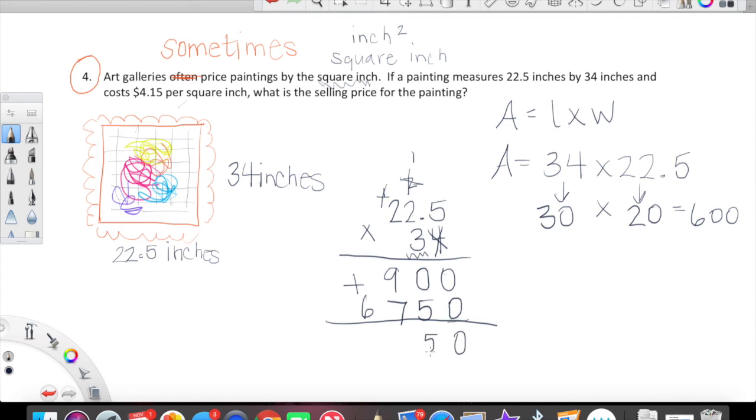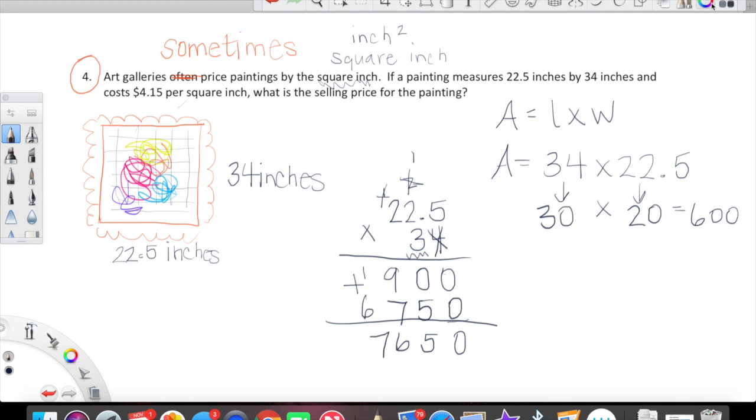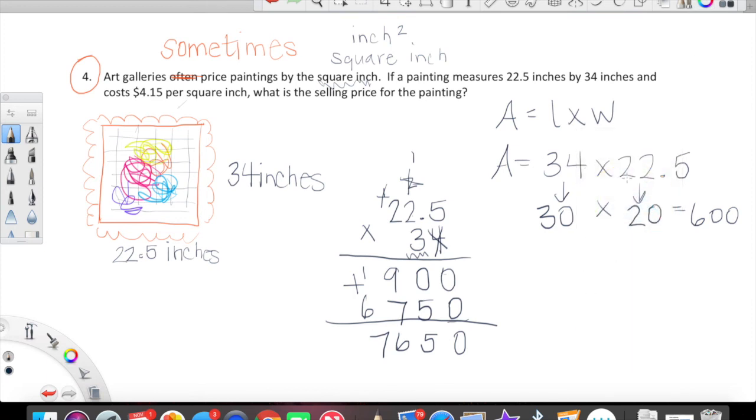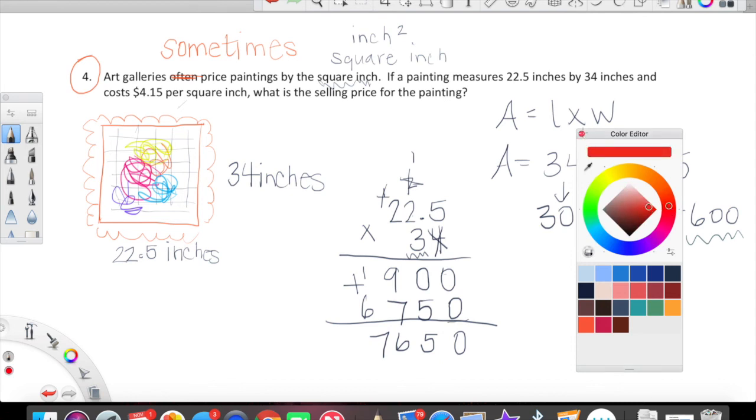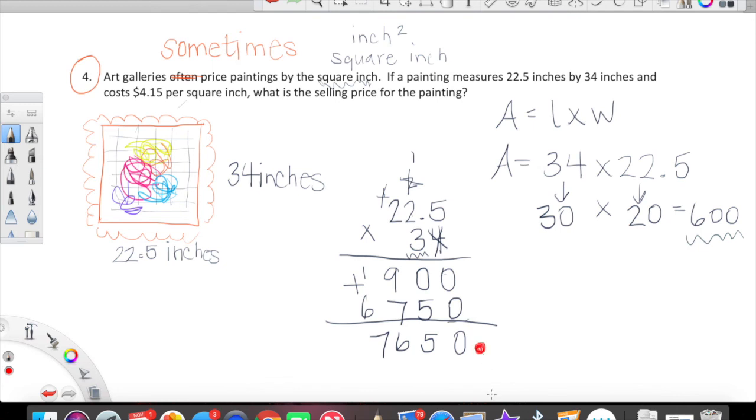Let's go ahead and add up our two partial products. We're going to look at a zero, a five, nine plus seven is 16, one plus six is seven. Okay, so we have seven, six, five, zero. Let's think about our decimal placements. We want our final product to be pretty close to 600. Would it make sense to put our decimal point here so that our final product would be 7,650? Nope. What about here, you guys? 765. Well, 765 is pretty close, as far as place values go to 600 because our largest place value is in hundreds here and here. So that is exactly where we're going to place our decimal point. However, we are not finished with the problem yet. This is the area. The area of this gorgeous work of art is 765 square inches.